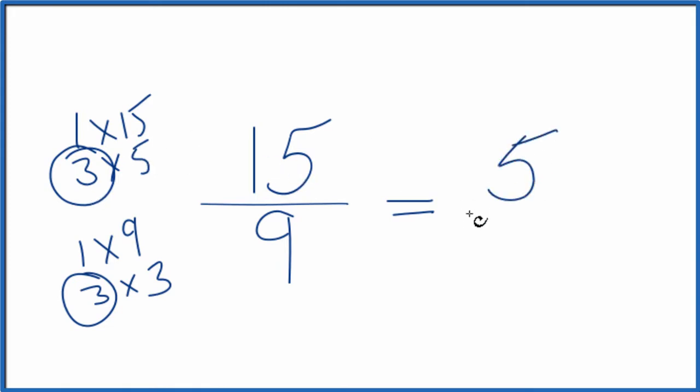Let's divide 15 by 3. We get 5. And divide 9 by 3. We get 3. So the fraction 15 ninths we could simplify that down to 5 thirds.